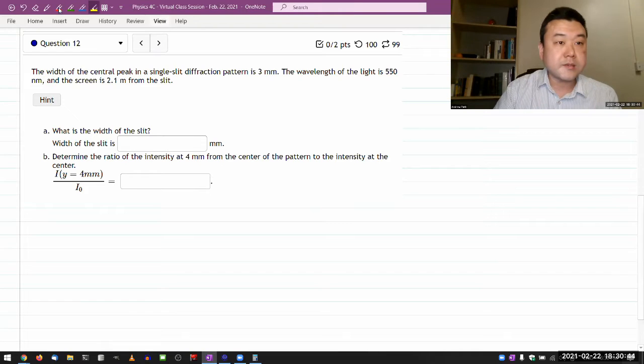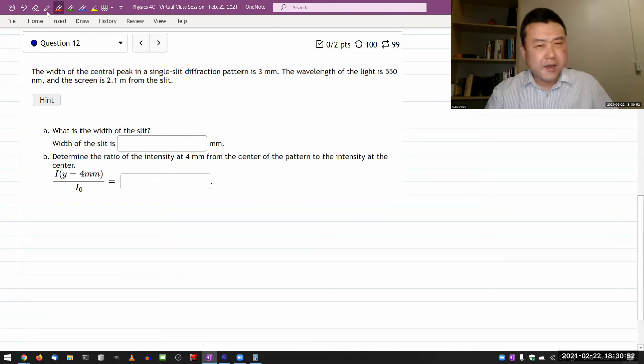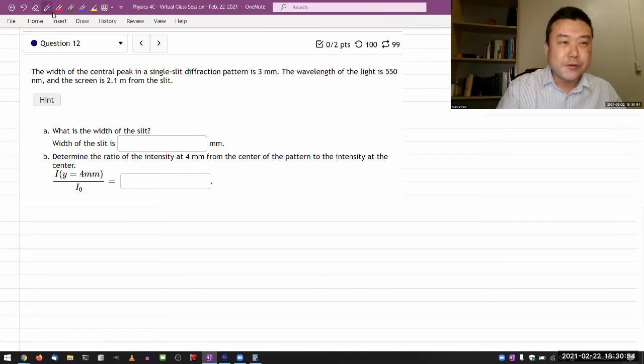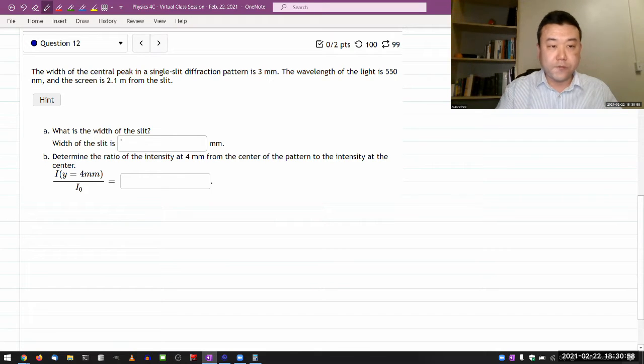So it says the width of the central peak in a single slit diffraction pattern is... okay, that's not giving me a... I need to actually draw this thing to even label the information I'm being given.